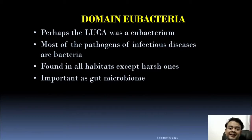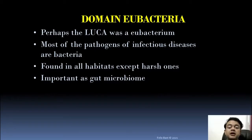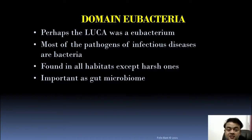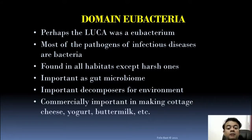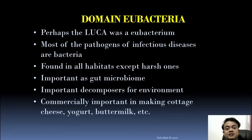Eubacteria are found in all habitats except harsh ones. They are important as gut microbiome components, and fecal transplantation — transplanting excrement from a healthy person to a patient — is used to change gut microbiome. Gut microbiome research is an active field linked even to depression, neurological diseases, diabetes, heart disease, and cancer. Eubacteria are also important decomposers and commercially used in making curd, yogurt, buttermilk, cheese, and paneer through fermentation.